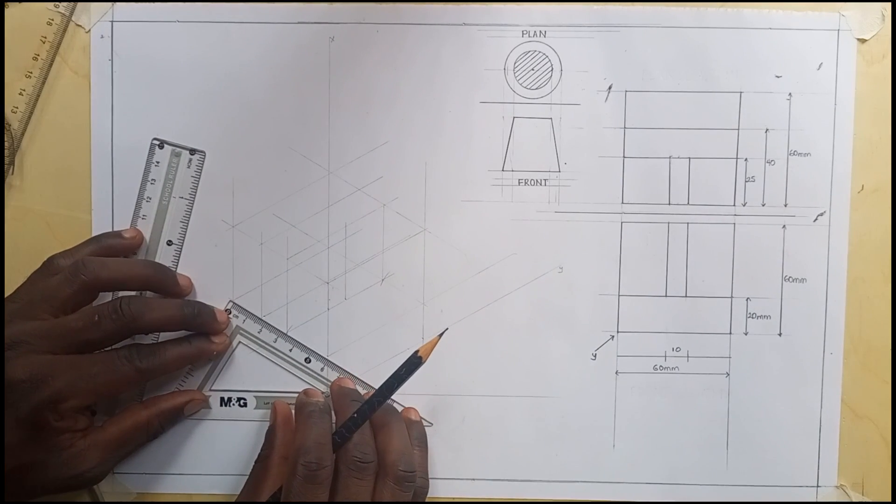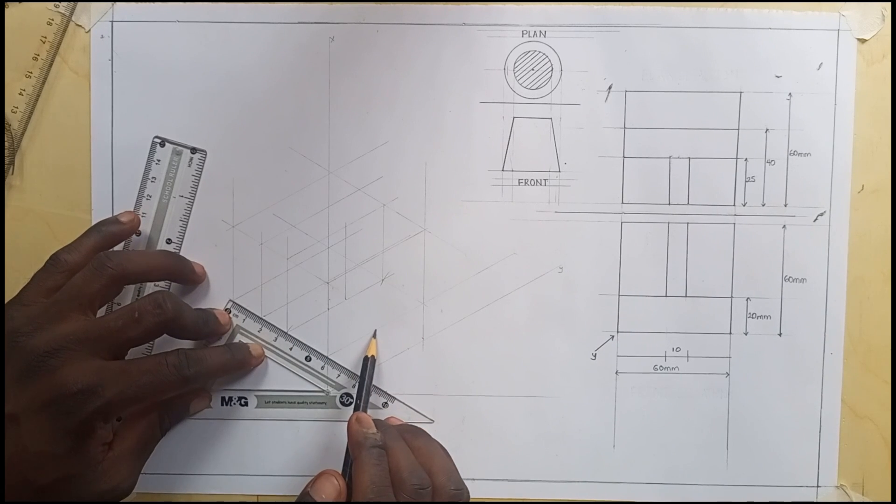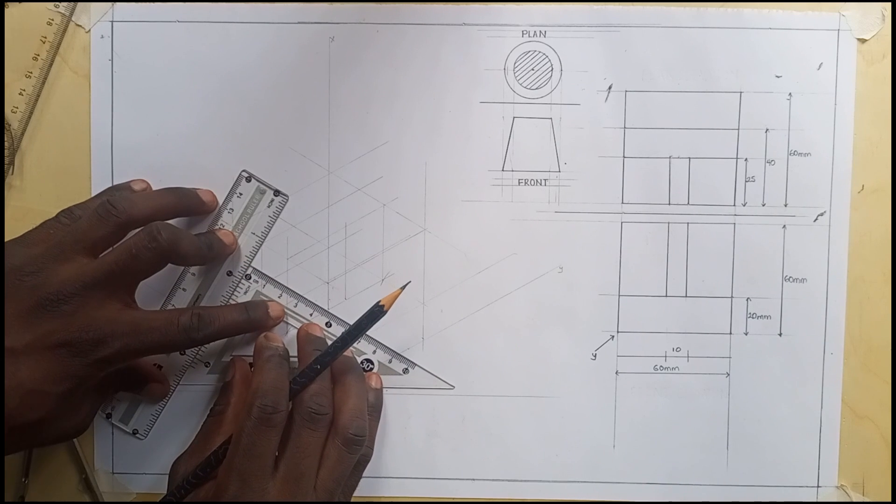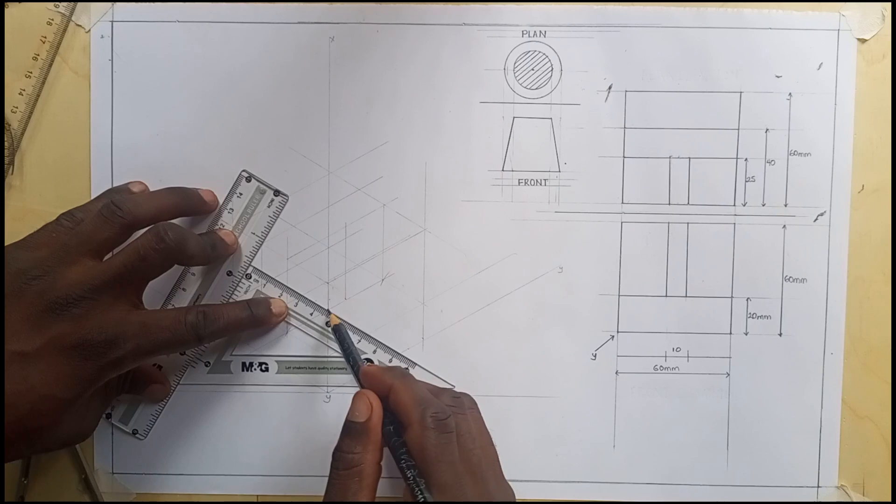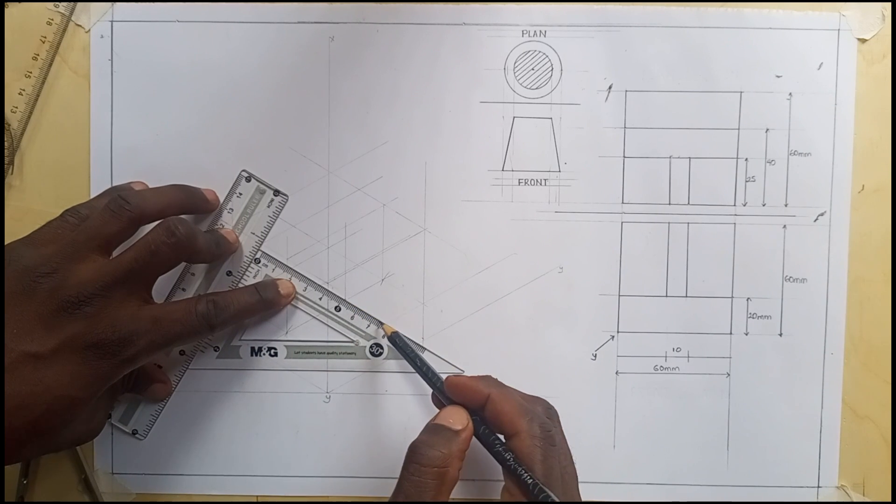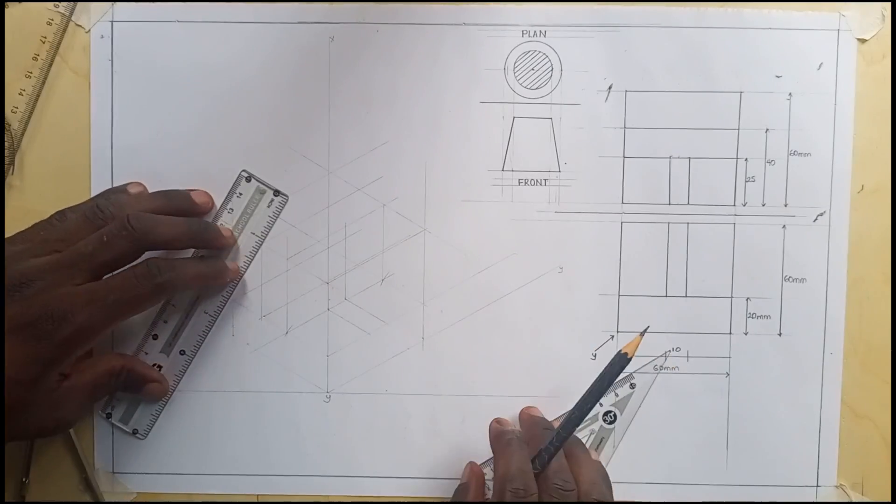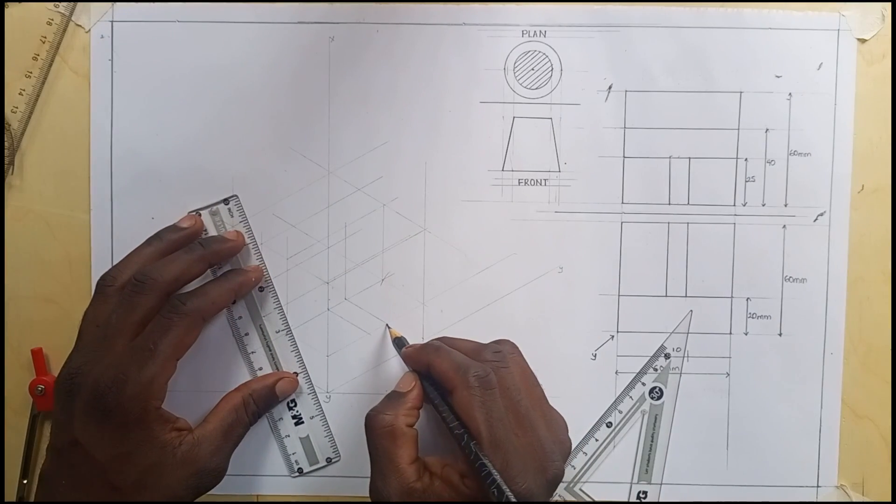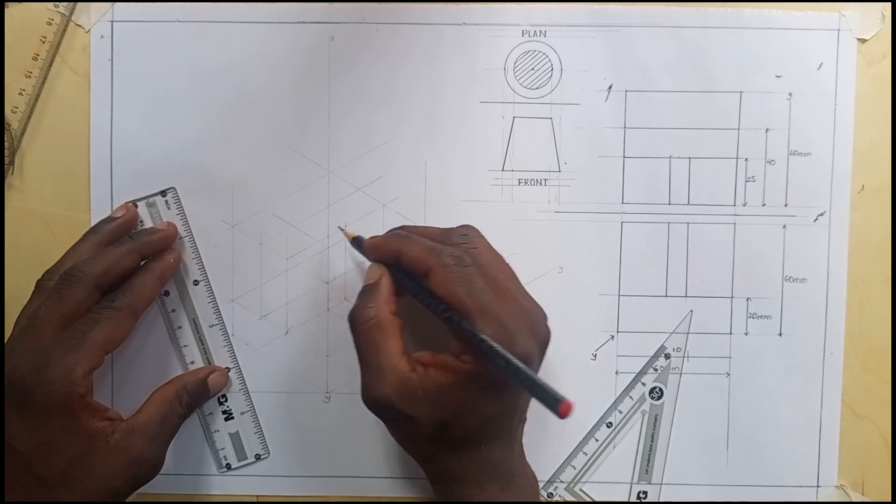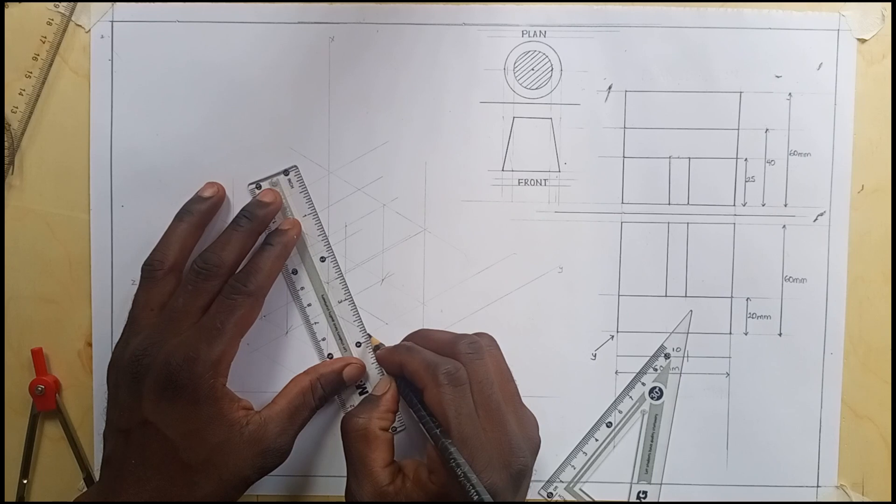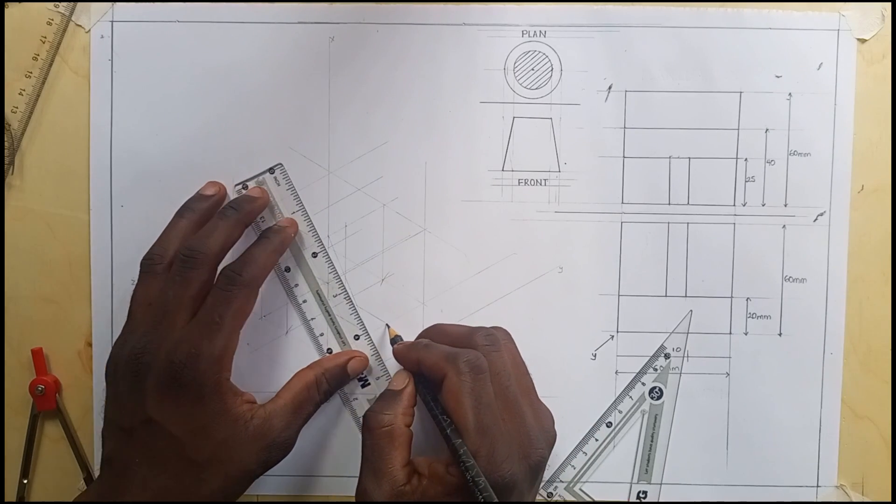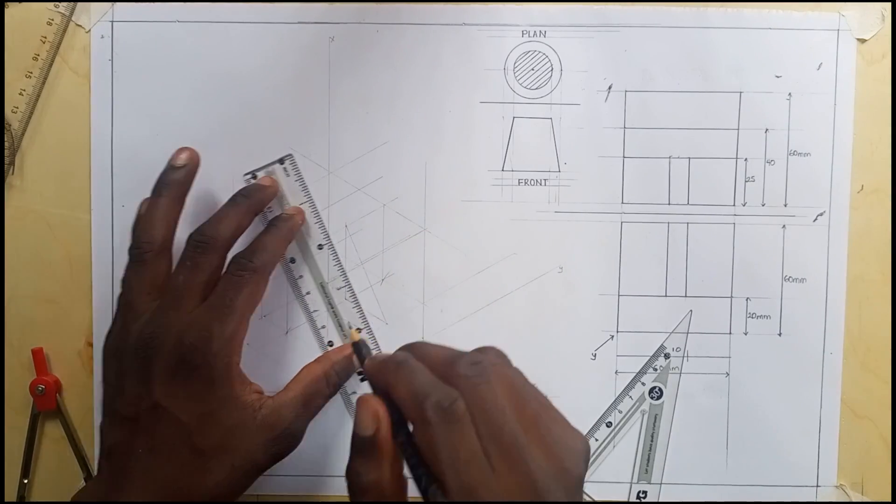We'll also transfer this 25 here to this line here. When you're done, I will join this point to this point and also this point to this point here.